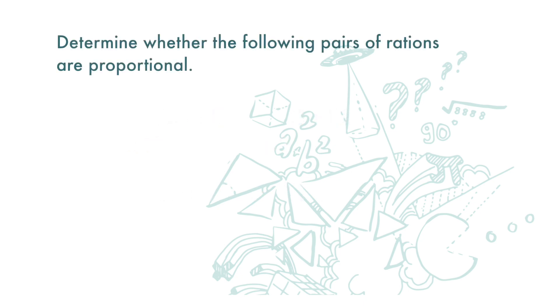One more question. Determine whether the following pairs of ratios are proportional. The second ratio, 42 over 54, can be simplified to 7 over 9. So both the ratios are equivalent, and hence proportional.